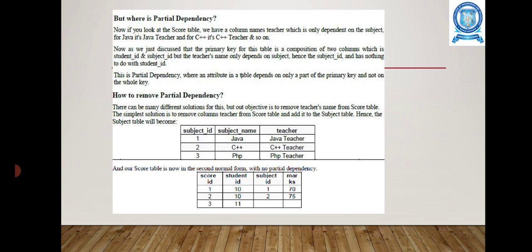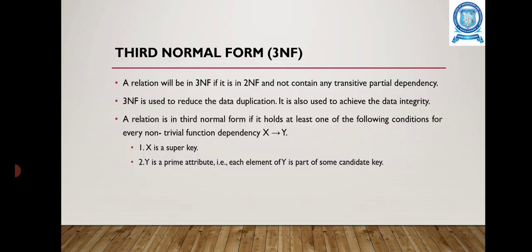In the 2nd Normal Form, the relation must be in the 1st Normal Form and must have no partial dependencies. A 2nd Normal Form is: 1st Normal Form plus no partial dependency.